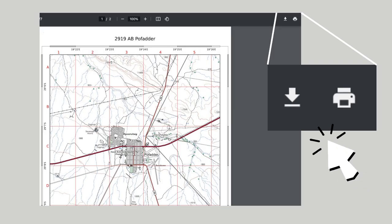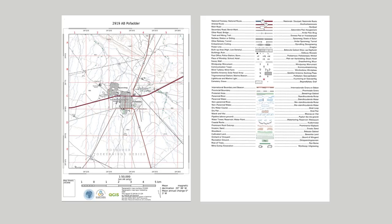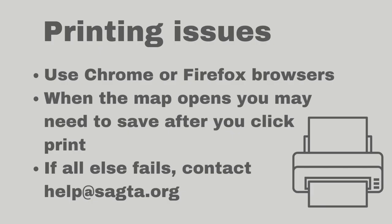A second window will come up on your browser, and depending on the browser, you can either click Download or Print. Two pages will print — one will be the map and the second will be the conventional signs. If you have any printing issues, I strongly suggest that you use Chrome or Firefox browsers, and sometimes you will be required to save after you click Print.